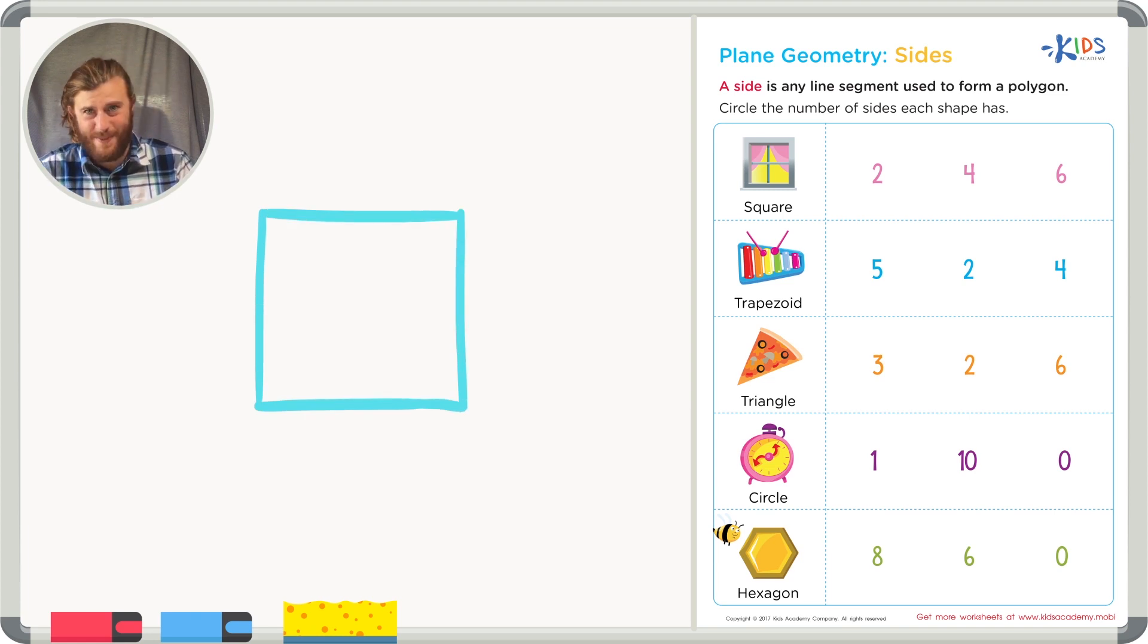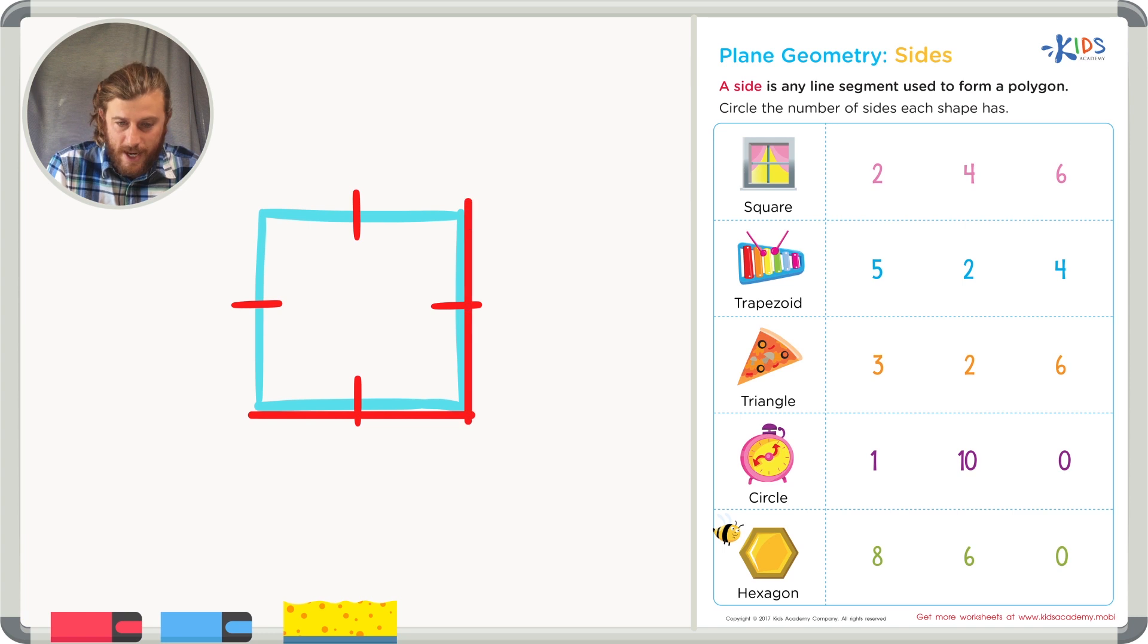Do you know this shape? How many sides does it have? Let's count together. This shape is called a square. And this shape has one, two, three, four sides. I can see four separate line segments in this shape that connect to form my polygon called a square.